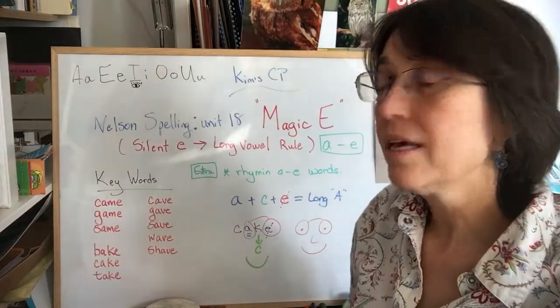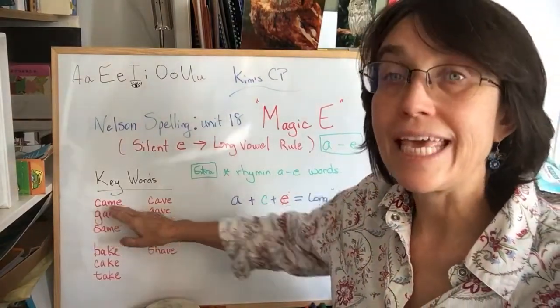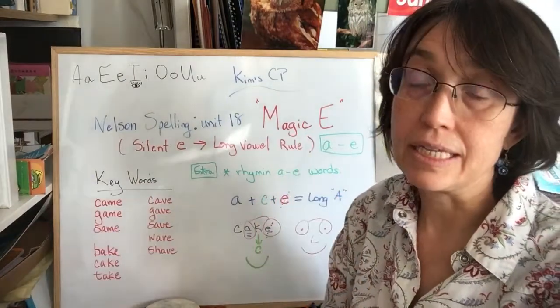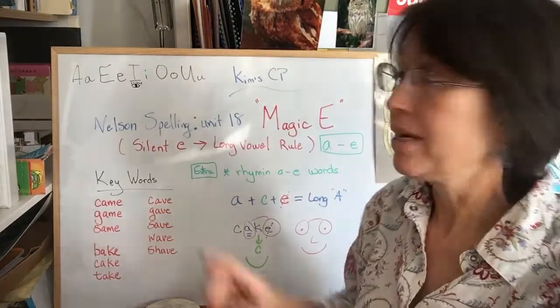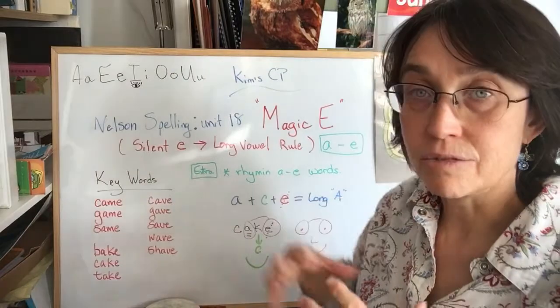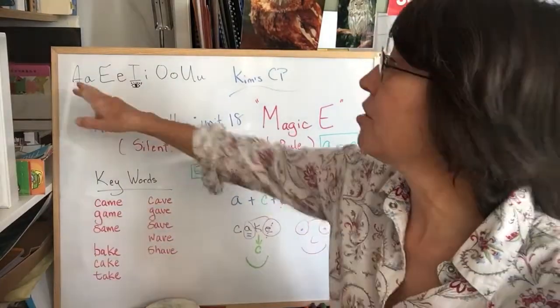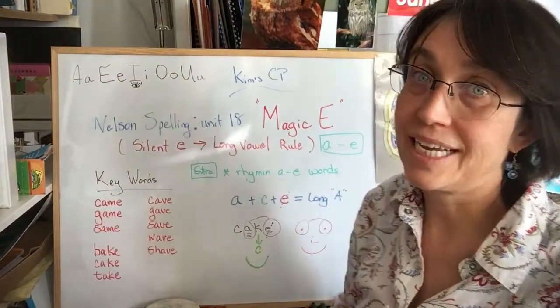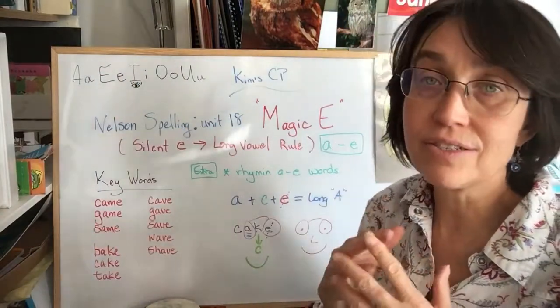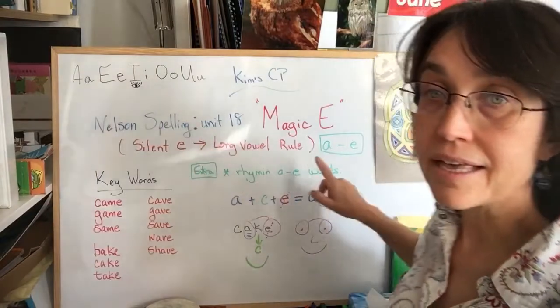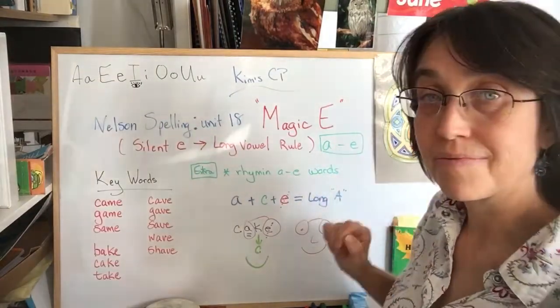So you hear the sound A and you don't hear the E. The E is magic and silent. And its magic goes to the vowel before and makes it the long sound. And in this part, unit 18, it's the sound A, A.